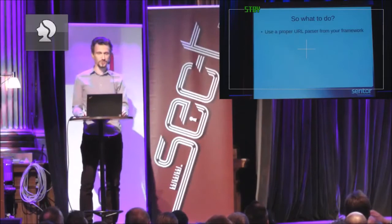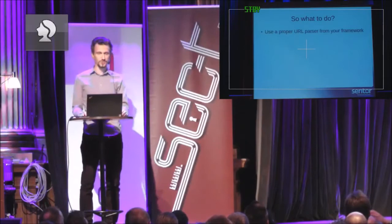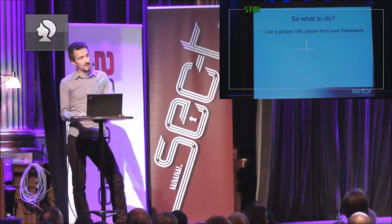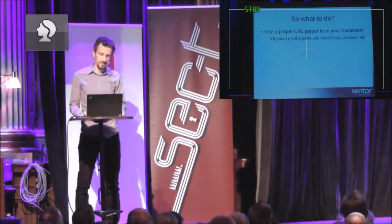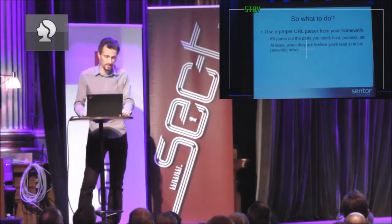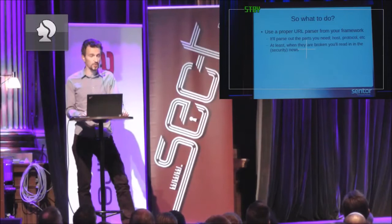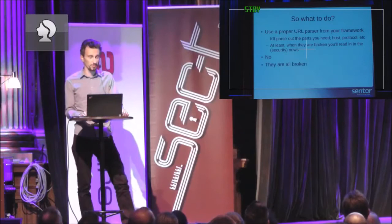So what do you do if you want to validate URLs? Well, of course, you go have a look at your URL parser of your framework of choice — Java.net URL, Python's URL parser, and so on. They parse out all the parts you need: host, protocol, paths, pretty much anything. And if they break down and start doing incorrect validation, at least you should be able to read about it in the security news somewhere. That's what I used to tell people — but no, that's completely not the case, because all of the URL parsers are completely broken, and so are all the browsers.